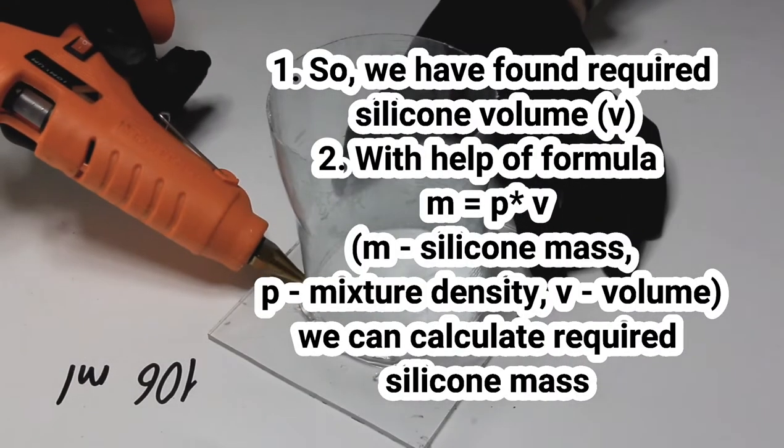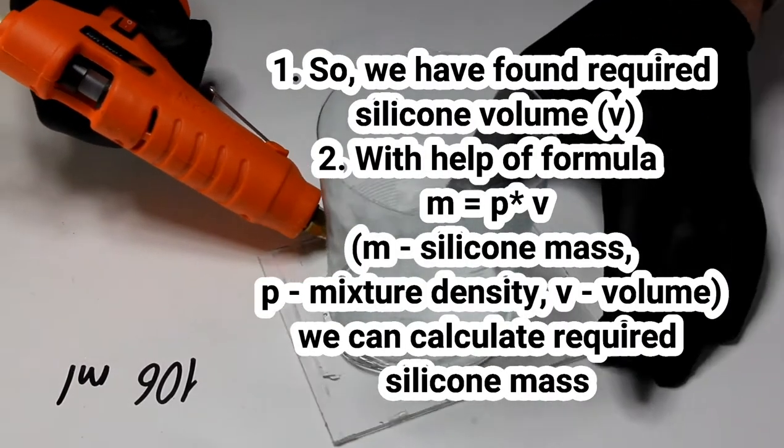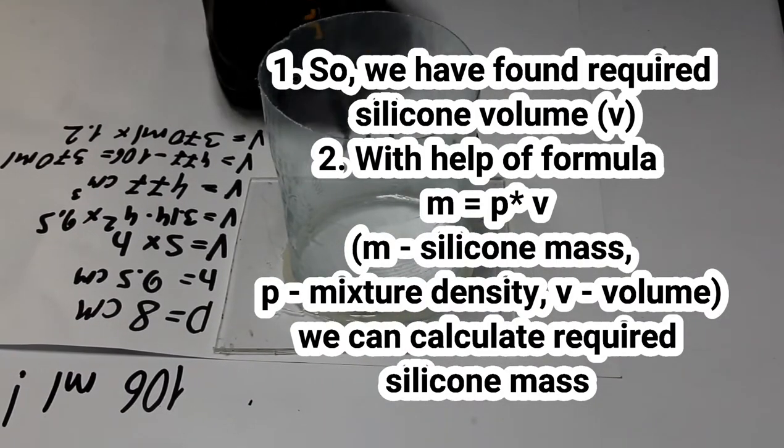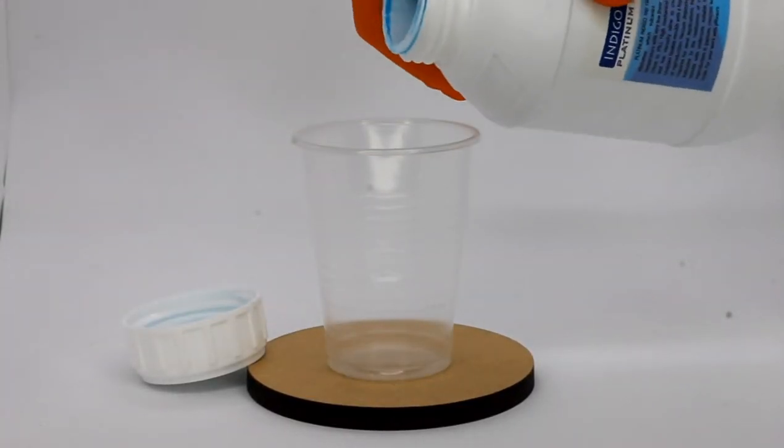Thoroughly seal bottom with thermal glue. Silicone mass we can get using formula shown down below. In our case plastic bottle will be the best container for pouring silicone.